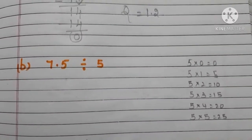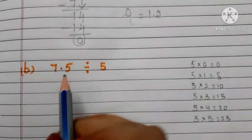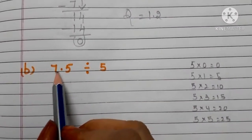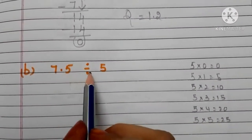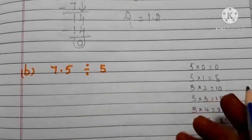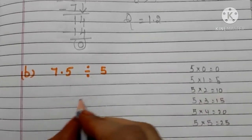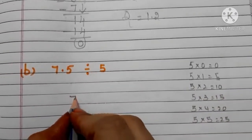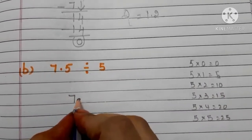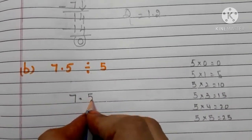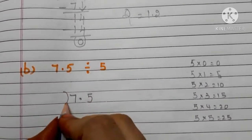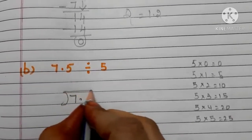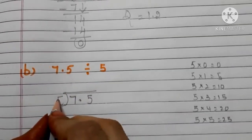Let us go to another example. Here we have 7.5 divided by 5. First, we have to arrange like this: 7.5 divided by 5.